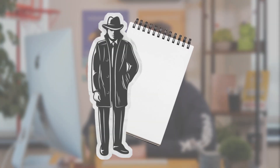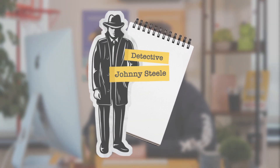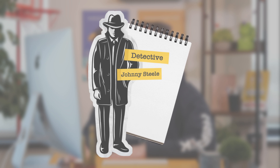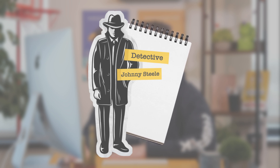Before I start, I like to imagine a story. After all, we are storytellers. Today, I want to create a film about a detective. His name is going to be Johnny Steele. I imagine him with a hat and a trench coat in the middle of the street at night. So let's start writing.